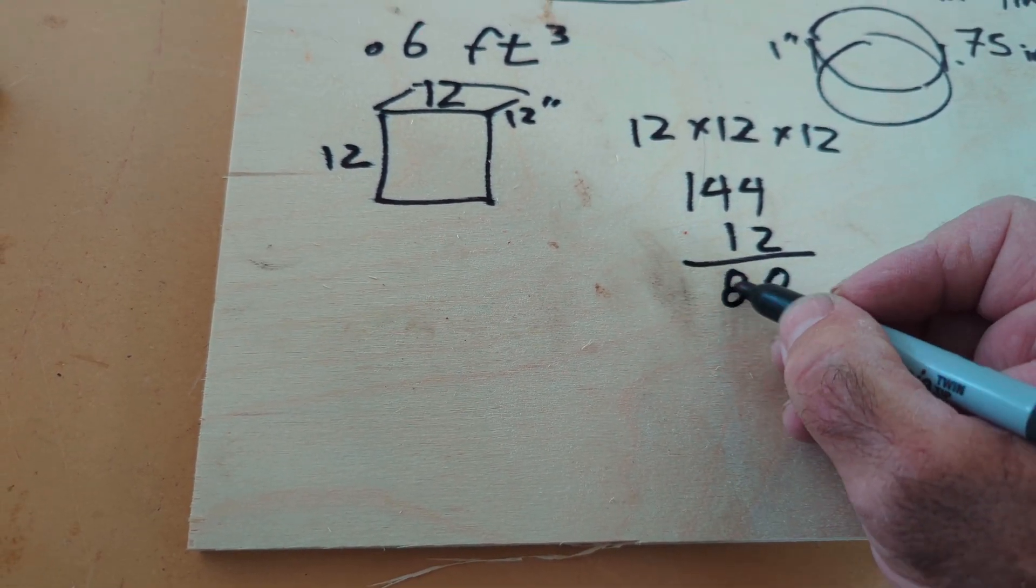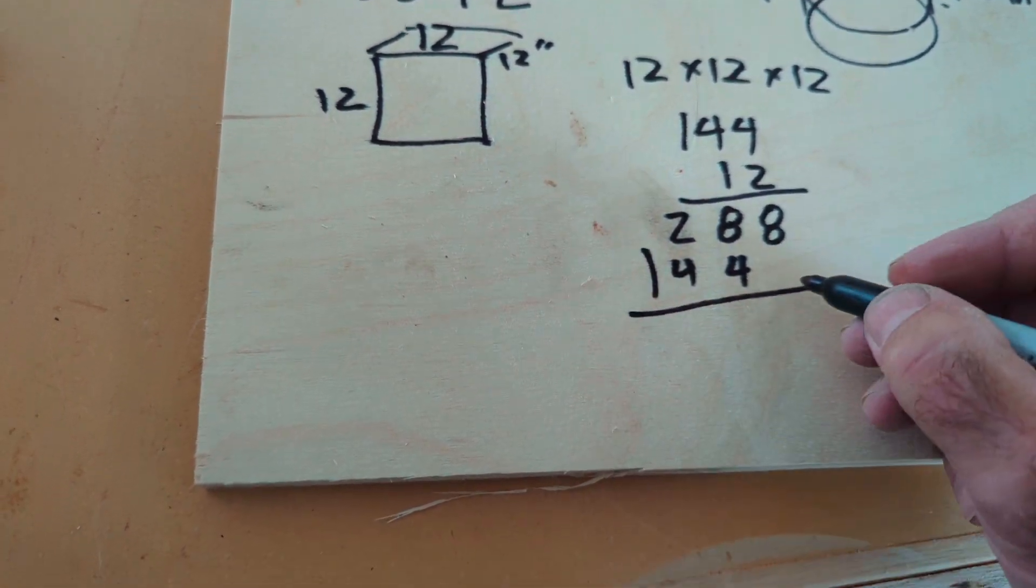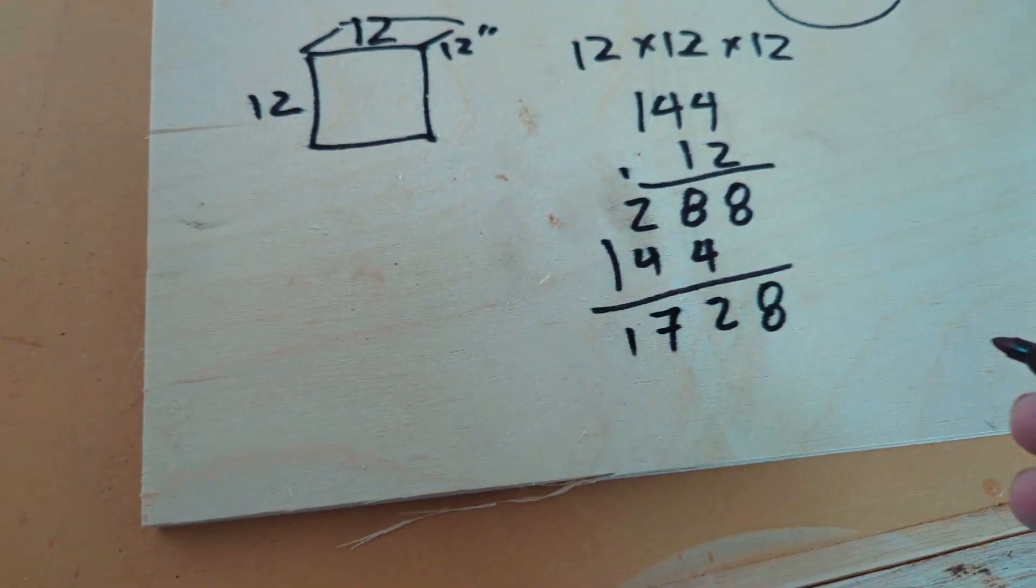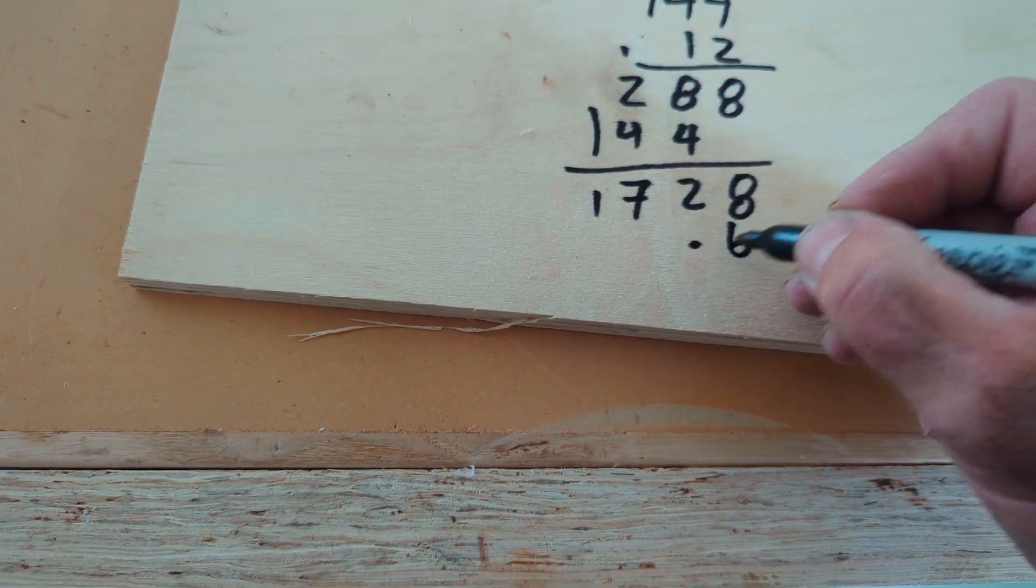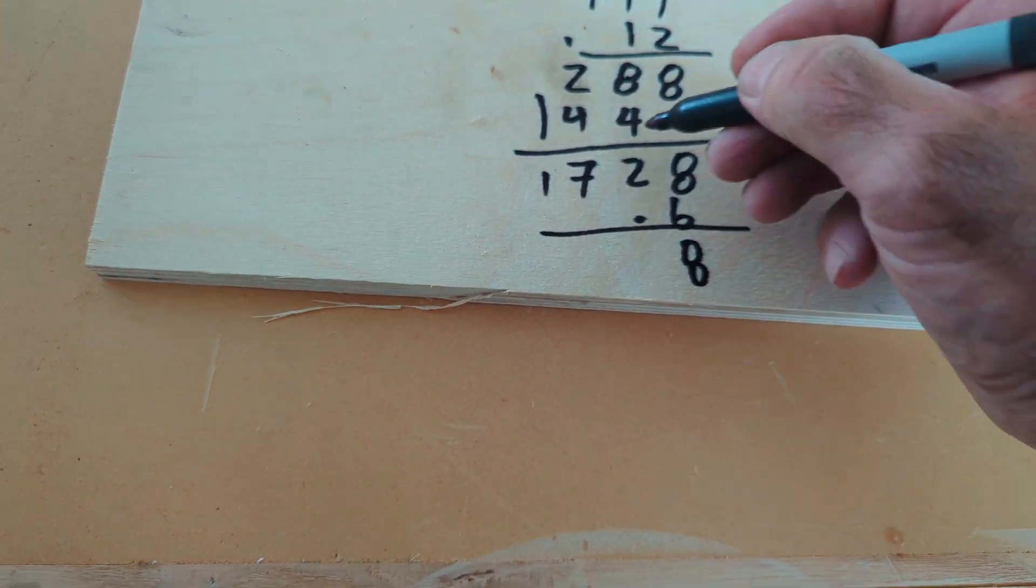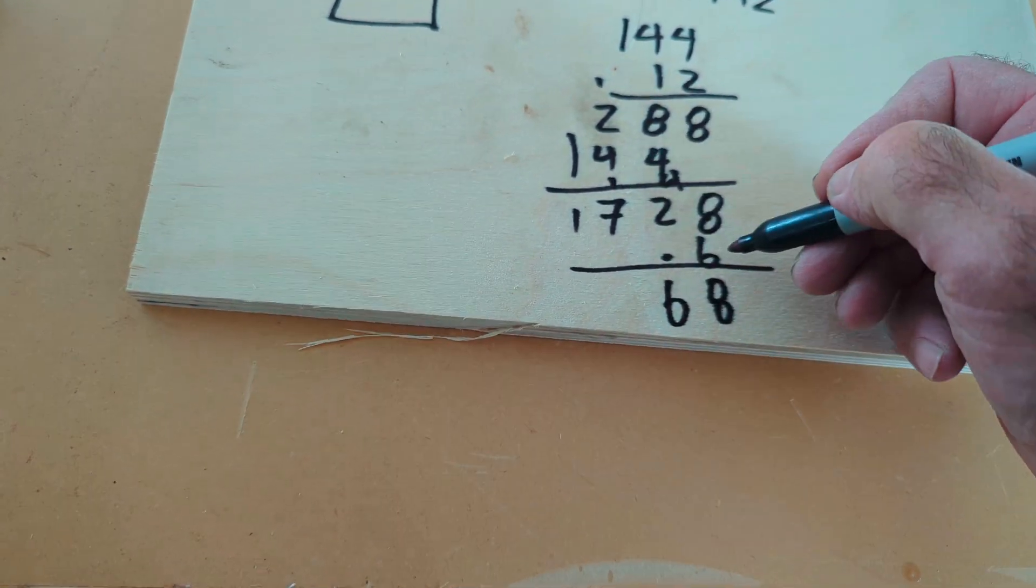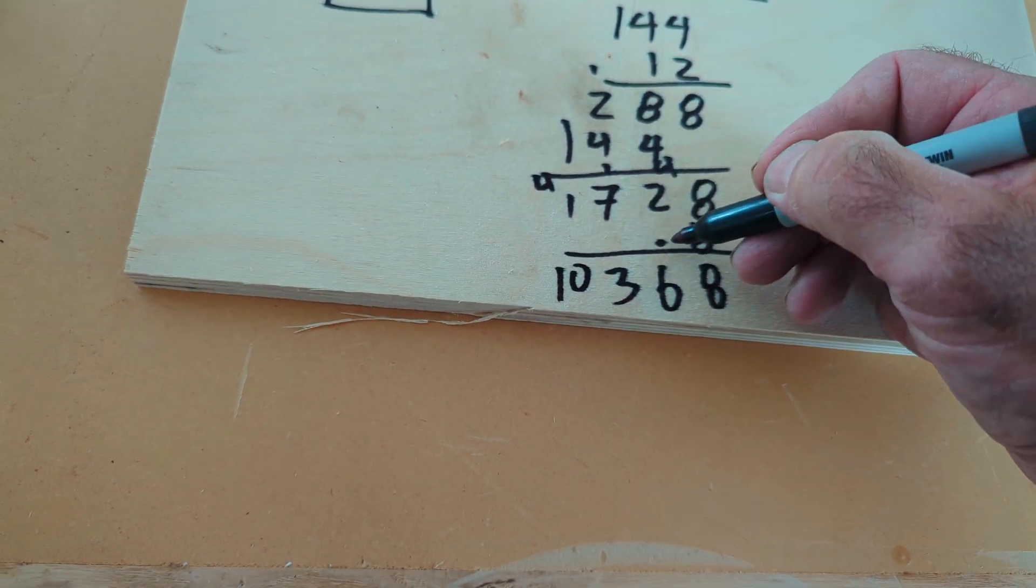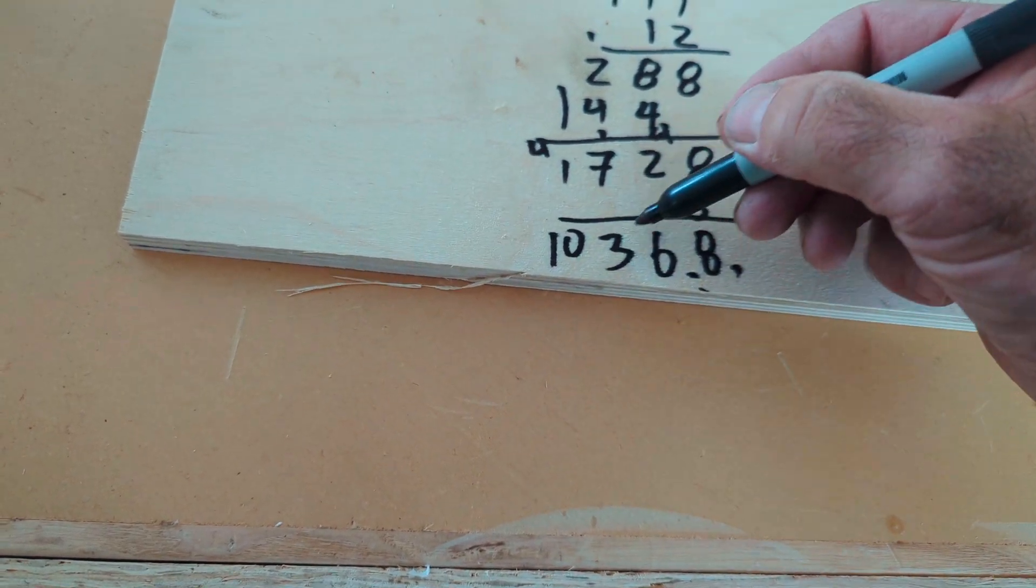144 times 12 is 1728, but it's not a full cubic foot. It's 0.6. So we're going to multiply this by 0.6 to get the total number of cubic inches. So we're going to move the decimal place over. So we'll call it 1037.